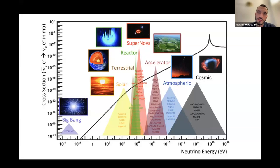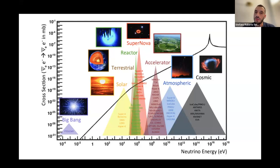We have terrestrial neutrinos, solar neutrinos, neutrinos produced by the Big Bang, neutrinos produced by particle accelerators, atmospheric neutrinos produced by muon decays, cosmic neutrinos. We have actually built tens of experiments now to detect this kind of very elusive particle.